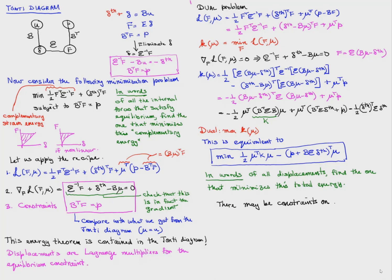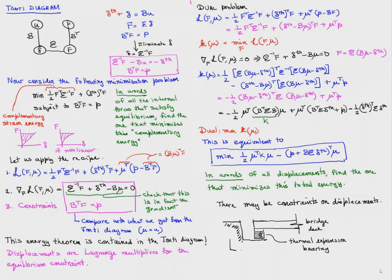There may also be constraints on displacement. For example, consider a bridge deck resting on a thermal expansion bearing, offset from an abutment by a distance u0. The displacement is constrained by u greater than or equal to minus u0, so displacement cannot take on any value — only certain admissible values. We therefore modify the statement of the energy theorem to refer to all admissible displacements.